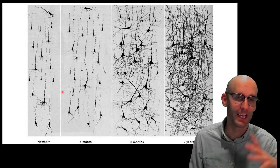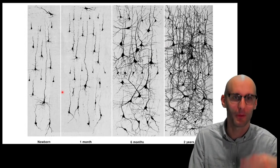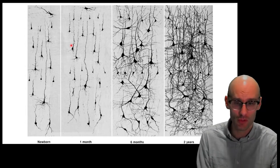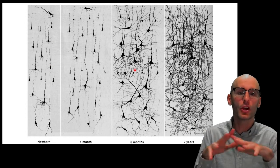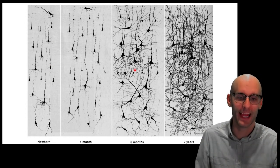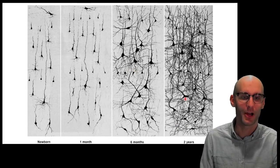These are different individuals. You can't, obviously, do silver staining on one individual over the time. It's all post-mortem. But what we can see is that neuronal connectivity increases with age dramatically over these times.